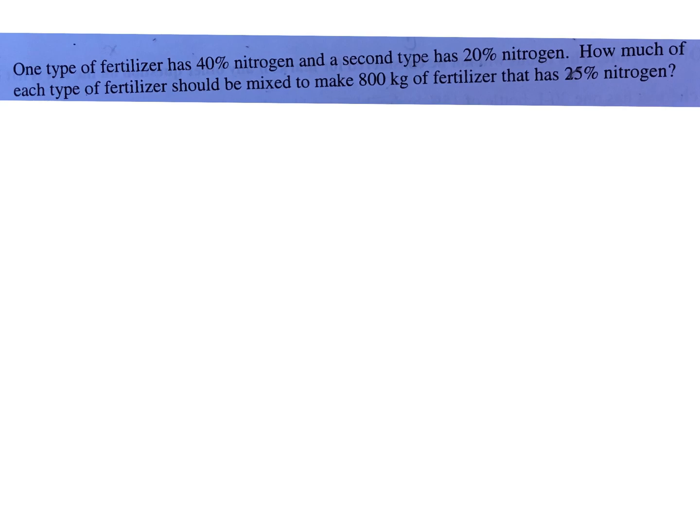Okay, so this question says one type of fertilizer has 40% nitrogen, and the second type has 20% nitrogen. How much of each type of fertilizer should be mixed to make 800 kilograms total of fertilizer that has 25% nitrogen? So how would we set this up? Let's first figure out our two variables.